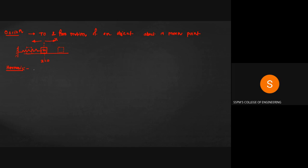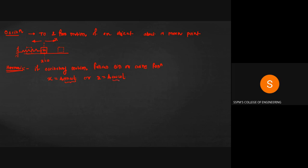What is harmonic motion? If the oscillatory motion follows the sine or cosine function, then this oscillatory motion we can describe as a harmonic motion. For harmonic motion, we can have the equation for displacement: x equals A sine(ωt) or x equals A cos(ωt). This trigonometric function describes how the displacement is changing with respect to time. This is called harmonic motion.